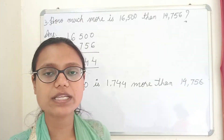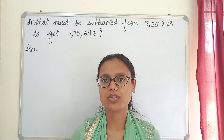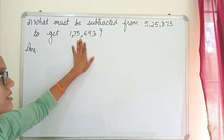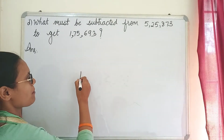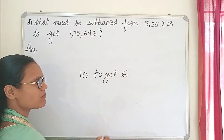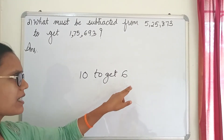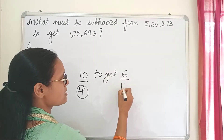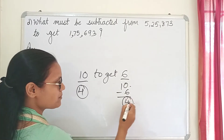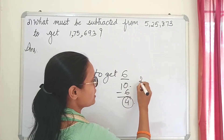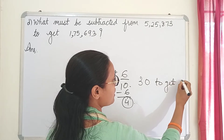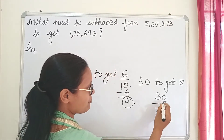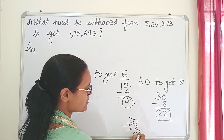The last question of this worksheet: what must be subtracted from a number to get another number? For example, what must be subtracted from 10 to get 6? We subtract: 10 minus 6 equals 4. Similarly, what should you subtract from 30 to get 8? 30 minus 8 equals 22. If you subtract 22 from 30 you get 8. Got it?